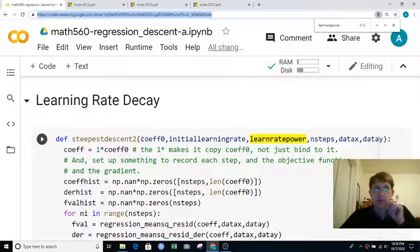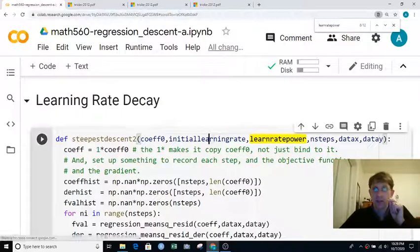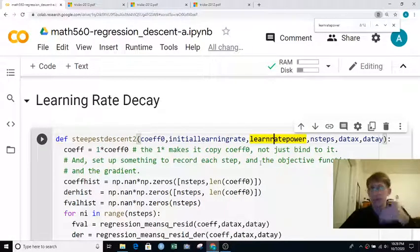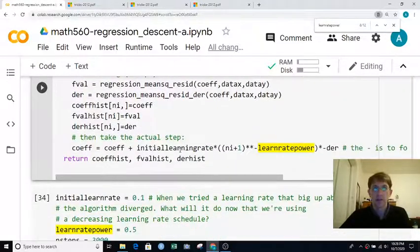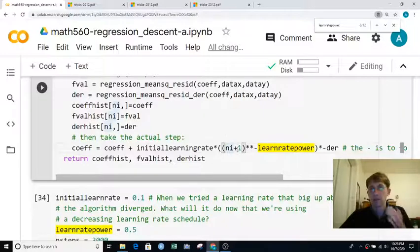Here's our second idea where we're passing in an initial learning rate and also a power to apply for like 1 over t, 1 over t squared, 1 over t to the 0.5. So now we're saying take that initial learning rate multiplied by basically 1 over the iteration count plus 1. That's because we're starting the inner iteration count at 0 and we don't want to divide by 0.